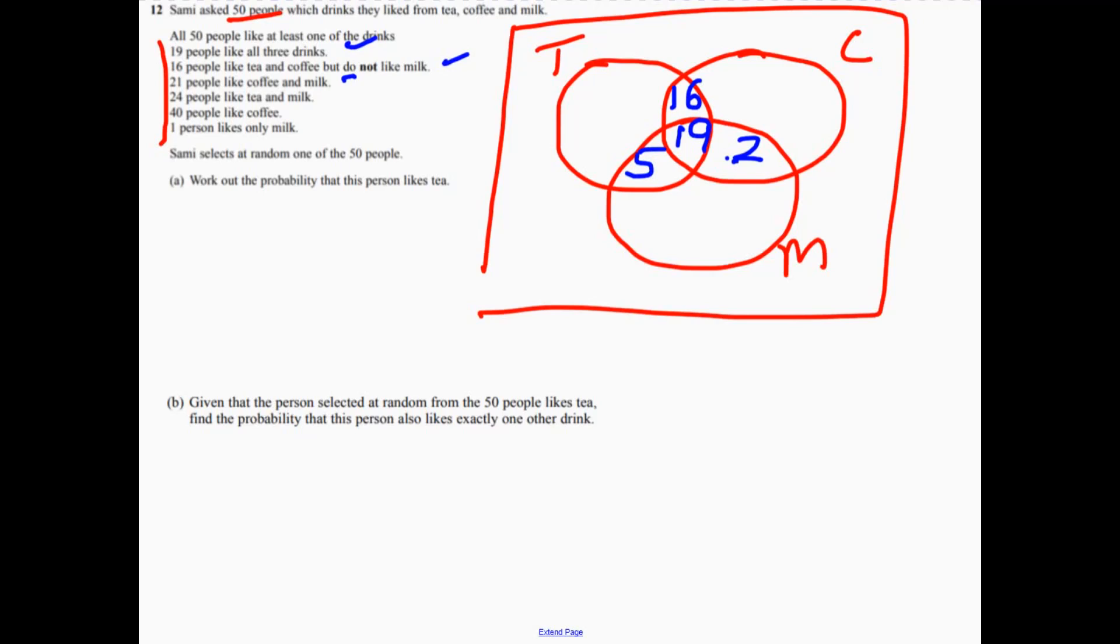40 people like coffee. So remember, the whole circle has to be 40. So 16 add 19 add 2 add 3 is 40.